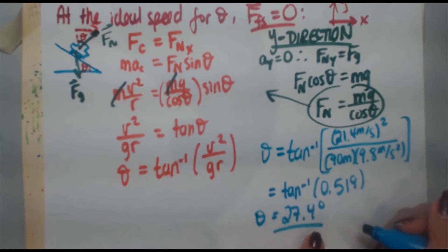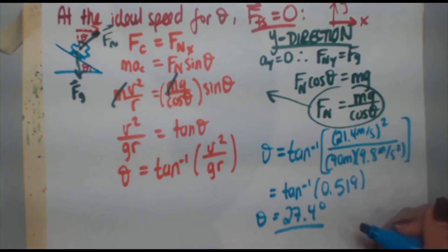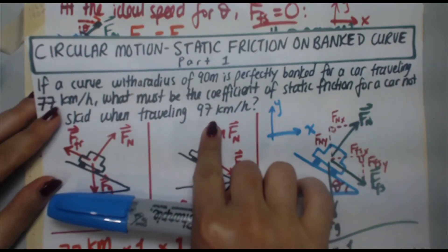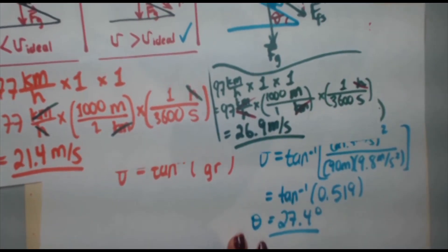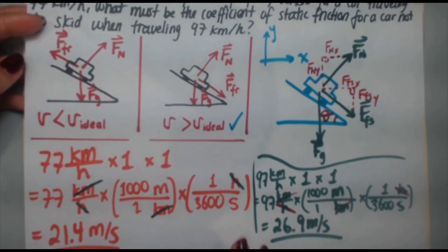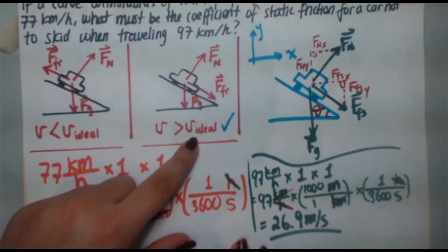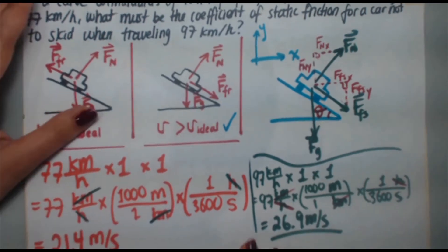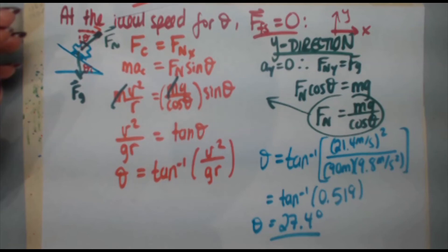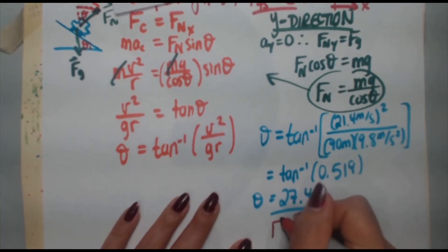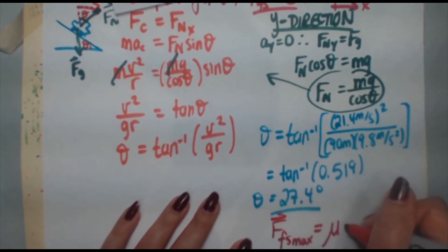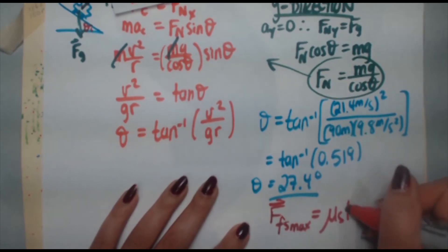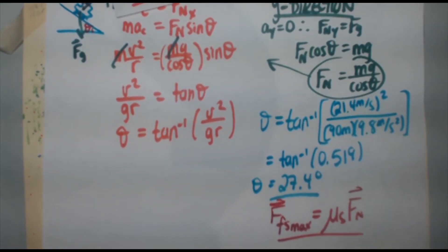That is the perfect banking angle for cars traveling at 77 km/h. Now, since we're going 20 km/h faster at 97 km/h, there will be friction pointing down the incline. Going greater than the ideal speed means we're dealing with maximum static friction, so: Ffs_max = μ × FN.